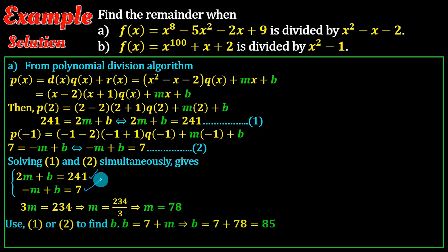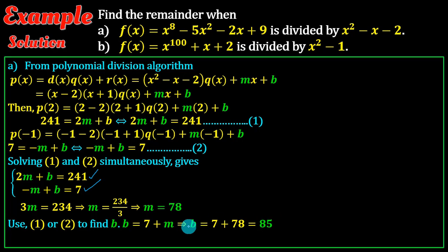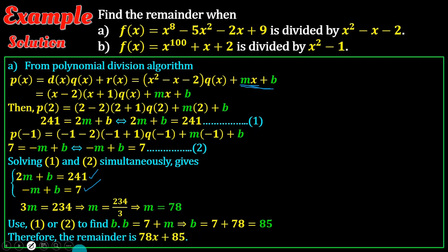Use equation 1 or equation 2 to find b. b equals 7 plus m. Therefore the remainder is equal to mx plus b, which becomes the final remainder.